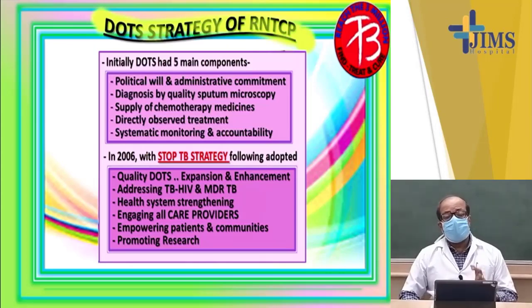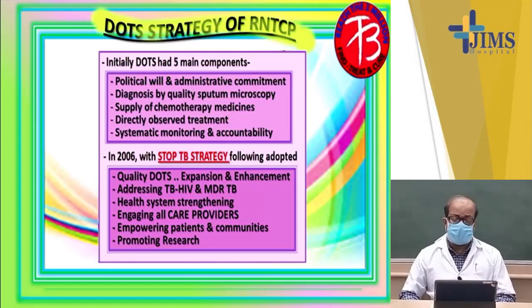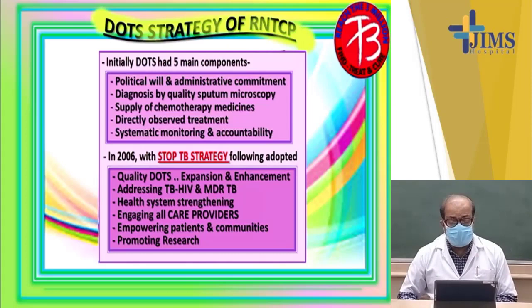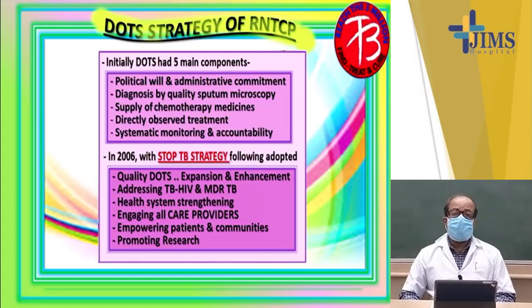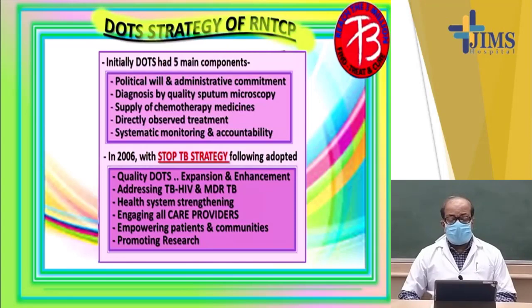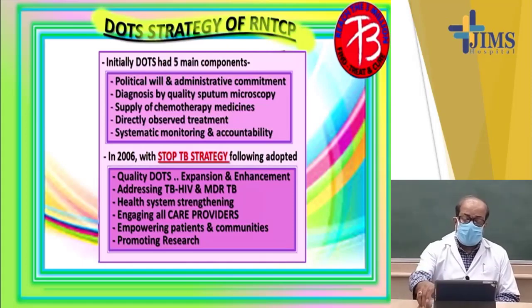These five points were very important when DOTS started in 1993 and were further consolidated in 1999 and 2006. However, in 2006, the Stop TB strategy was adopted to further improve service quality. The criteria included quality of DOTS with expansion and enhancement, addressing TB-HIV co-morbid conditions and multi-drug resistant tuberculosis, health system strengthening, engaging all healthcare providers, empowering patients and communities to help in case detection, and promoting research.